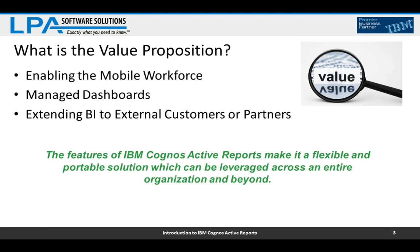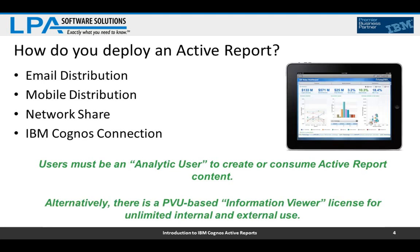Another use case is external customers or partners. If you want to express to customers the value you're providing — dashboards and indicators around service level agreements — and need to deliver a monthly performance report, doing this with an active report gives them a rich visual and interactive experience. They don't have to sign on to your Cognos Connection, which means you don't have to put Cognos outside your firewall. You can extend Cognos to customers via an MHT file. It's a flexible, portable, self-contained BI environment you can distribute.